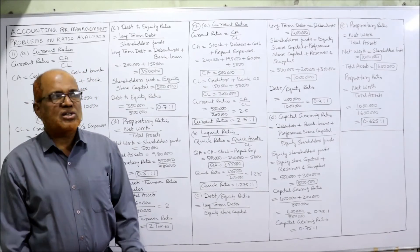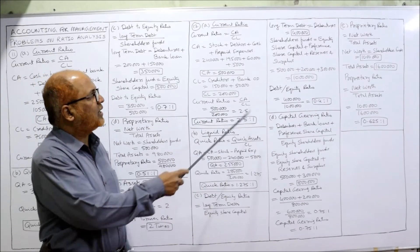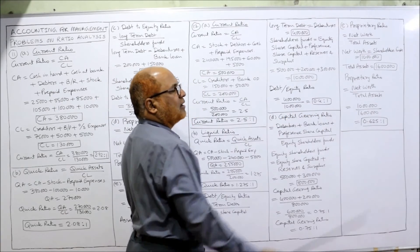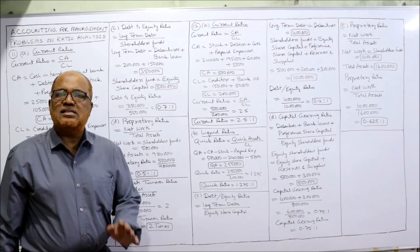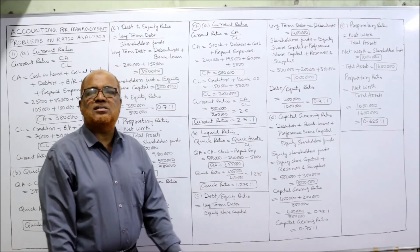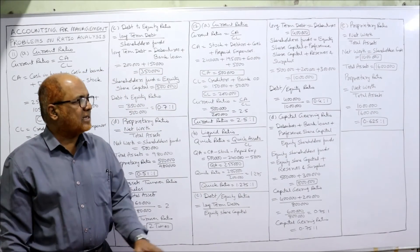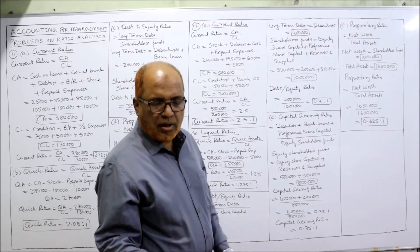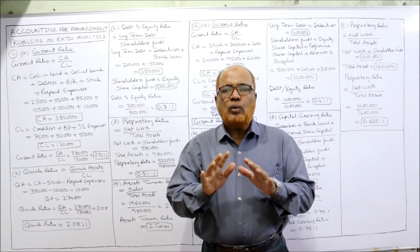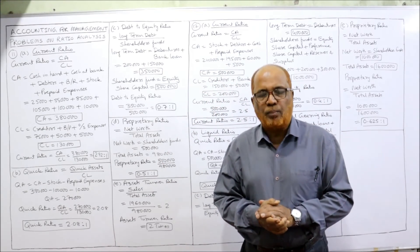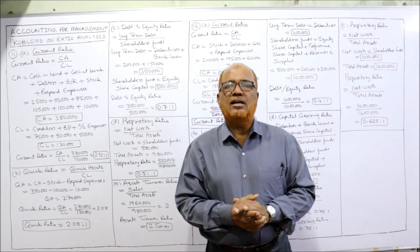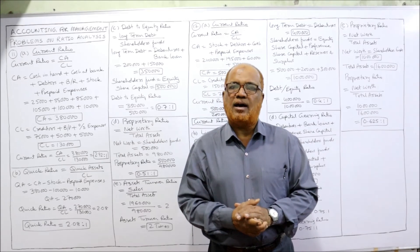Last ratio is proprietary ratio. Net worth divided by total assets. Net worth means shareholders fund, already calculated as 10 lakh. Total assets are given in the balance sheet total as 16 lakh. So 10 lakh divided by 16 lakh equals 0.625 is to 1. That is the proprietary ratio. In this video I have explained two problems — the 11th and 12th. These 12 problems are enough for ratio analysis. In the next video I'll start the new topic: common size statement analysis.